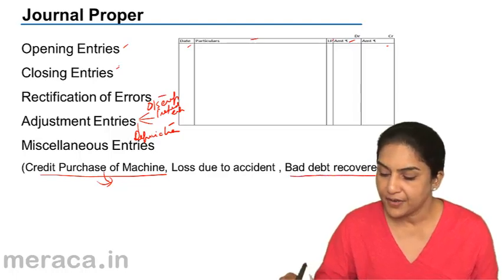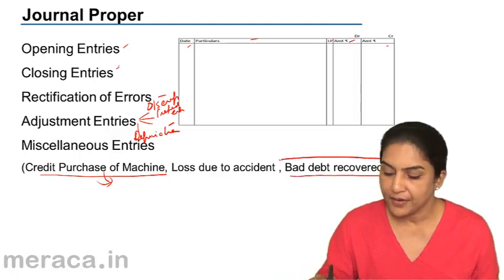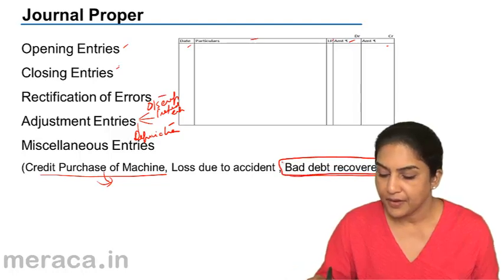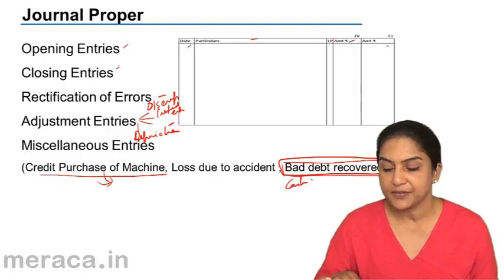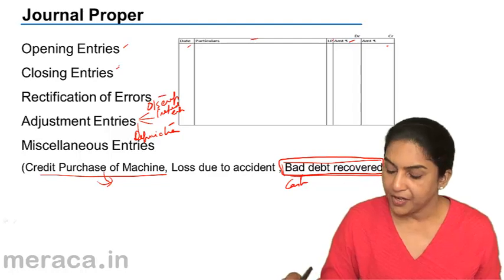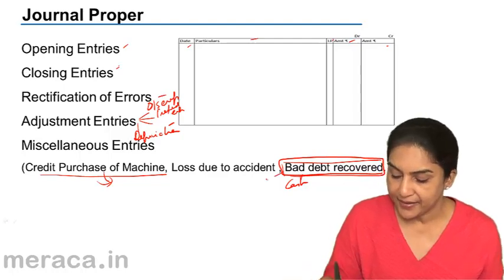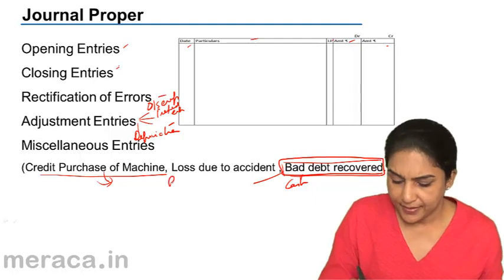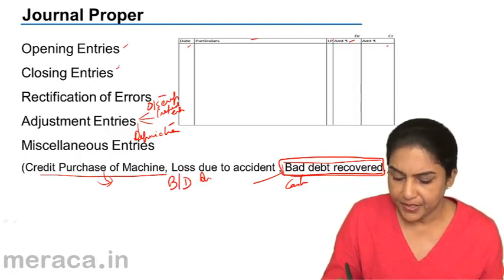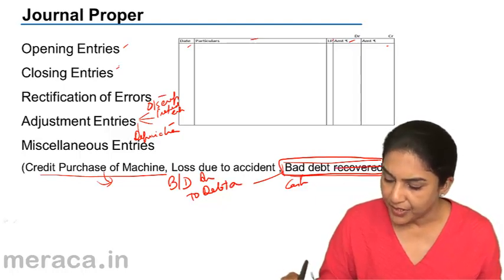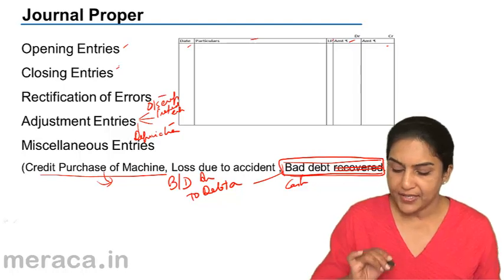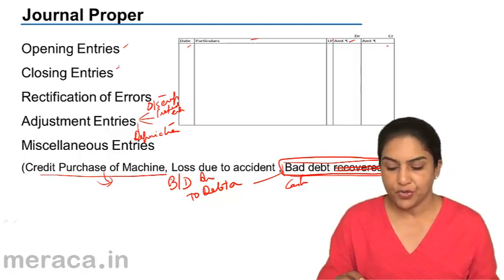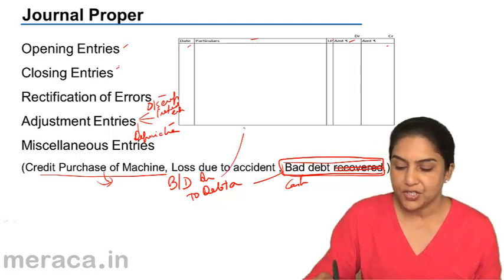Bad debt recovered will not come in this book if cash has been recovered. However, if there is a bad debt, what is the entry for a bad debt? Bad debt debit to debtor. Bad debt recovered goes to the cash book, but bad debt to debtor cannot come in the cash book, cannot come in the purchase book, cannot come in the sales book. So this would go to the journal proper.